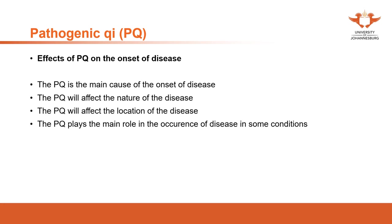If there is no pathogenic qi, we will be healthy and won't have any kind of disease. That's why we say it is the main cause — whenever people become sick, there must be pathogenic qi involved. That's why it is called the main cause.